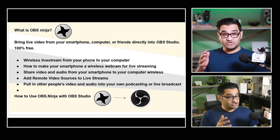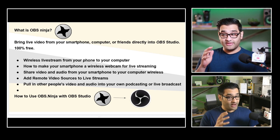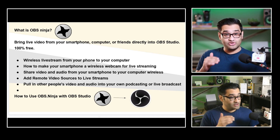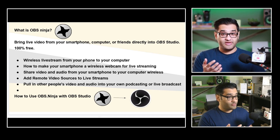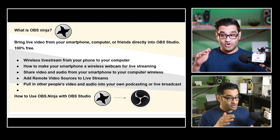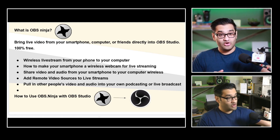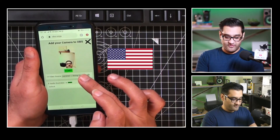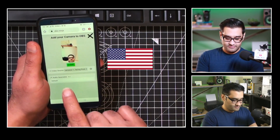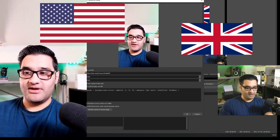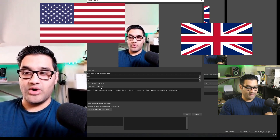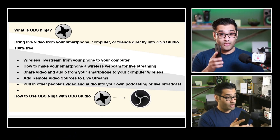OBS Ninja is an additional thing to OBS - it's not a new OBS or a replacement. It brings live video from your smartphone, your computer, or other friends' mobiles directly into OBS. So when you add a source in OBS like a camera, you could add another source wirelessly. You can wirelessly live stream from your phone to your computer. The link is sent from the computer to your phone, similar to how you do with Streamlabs, and the phone becomes a webcam over Wi-Fi or mobile data. It includes audio and video.